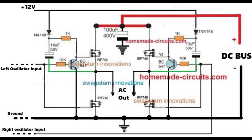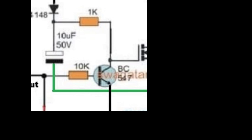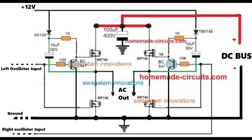However, creating an H-bridge using N-channel MOSFETs can be difficult since it involves a relatively complex bootstrapping network. The bootstrapping network refers to a small circuit network around the gates of the high-side MOSFETs, which enables them to conduct freely by ensuring that the gate voltage is always around 12 volts higher than its instantaneous source voltage.